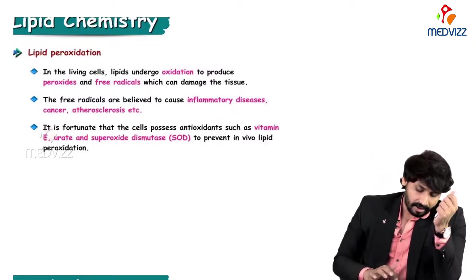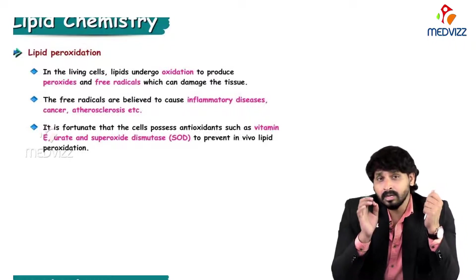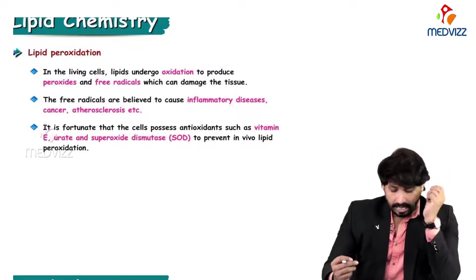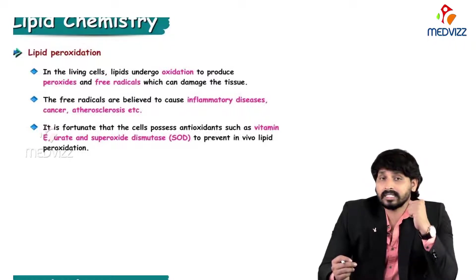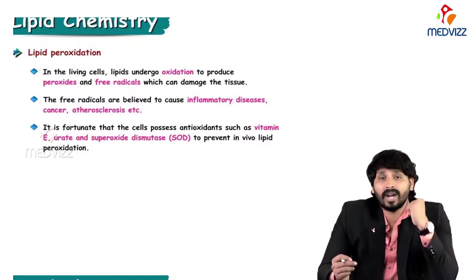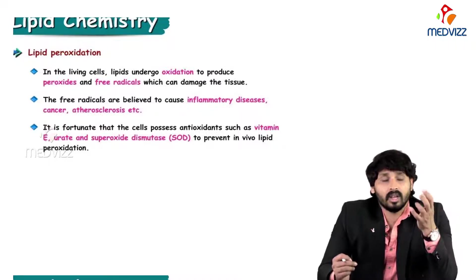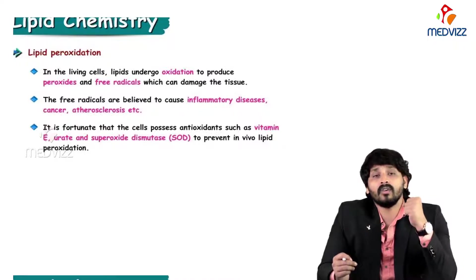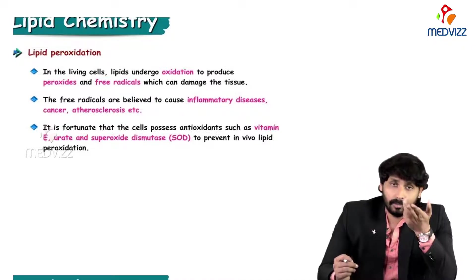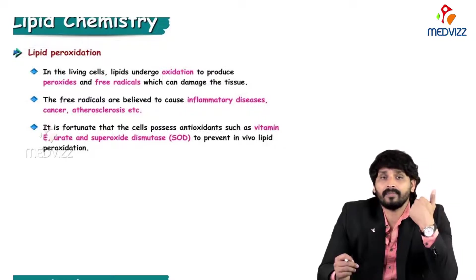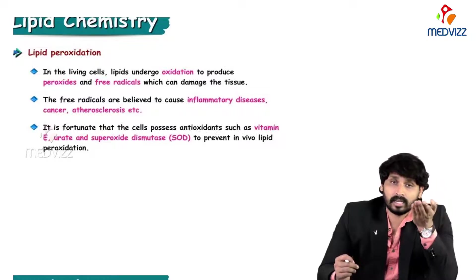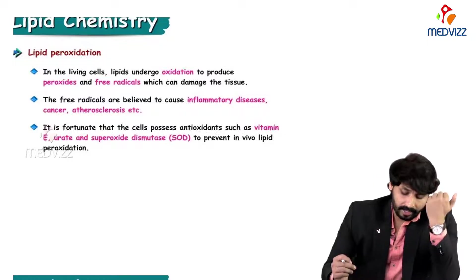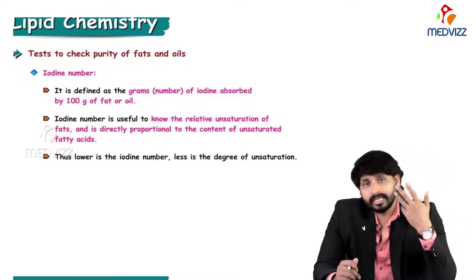Free radicals attack fatty acids, producing more free radicals that further damage tissue. These free radicals are believed to cause inflammatory diseases, cancer, and atherosclerosis. Fortunately, cells possess antioxidants such as vitamin E, urate, and superoxide dismutase - these are potent fighters and enzymes that prevent lipid peroxidation.